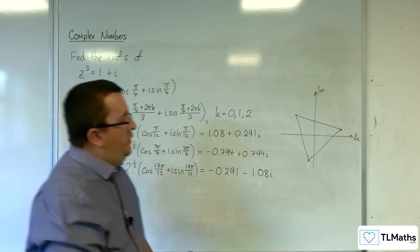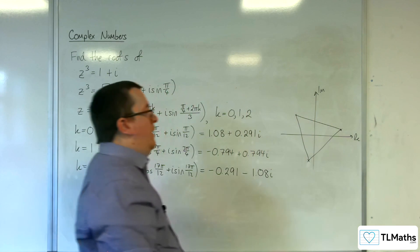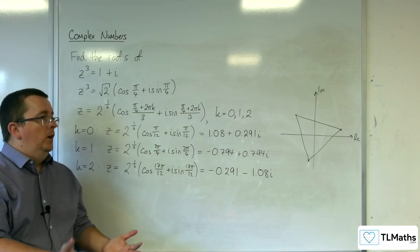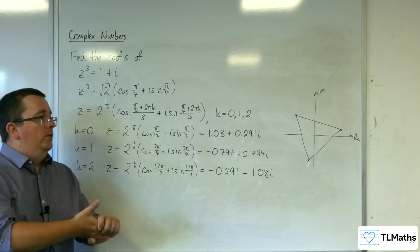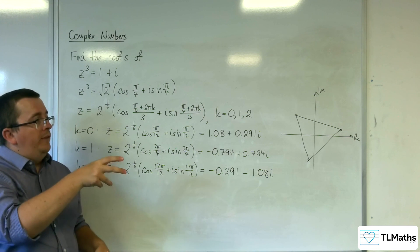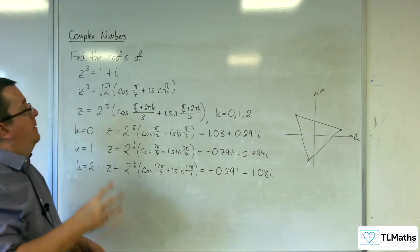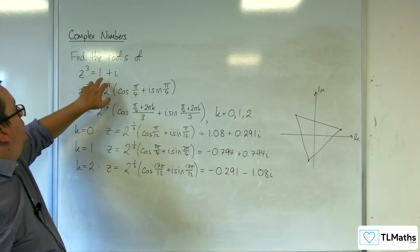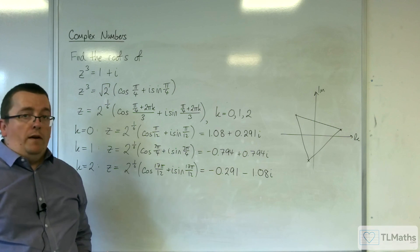So you've still got a triangle, an equilateral triangle centered at the origin. But it's rotated round somewhat because we're finding the cube root of 1 plus i rather than 1.